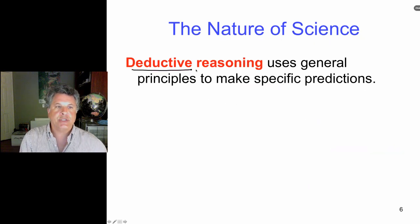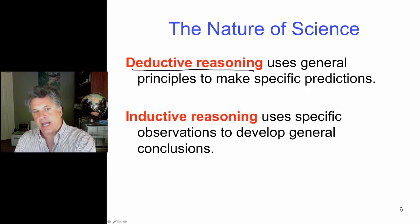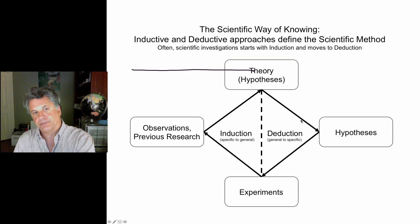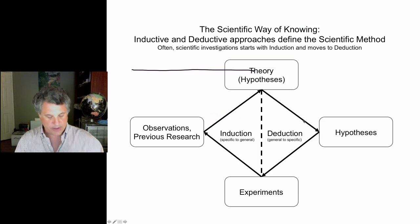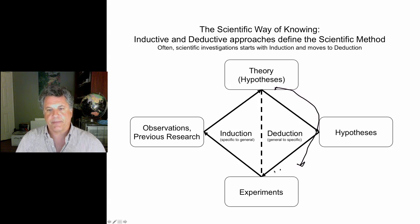Deductive reasoning is using general principles to make specific predictions, whereas inductive reasoning uses specific observations to develop general conclusions. So we can draw that here, we can have a schematic here which allows us to define this. So in deductive reasoning we are moving from general down to specific, whereas inductive reasoning moves from specific observations to more general theories.